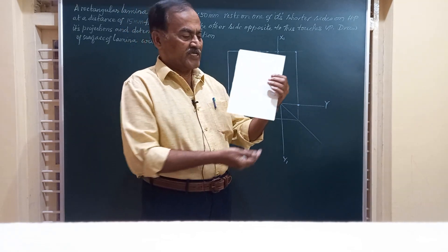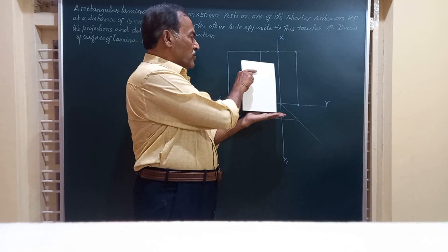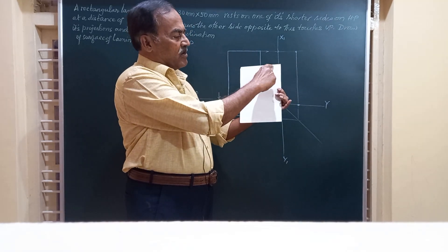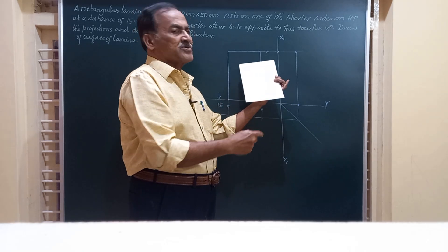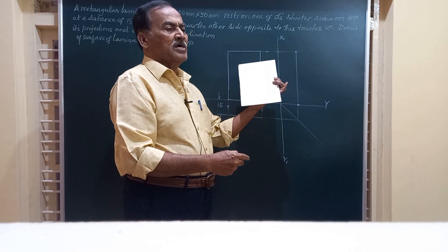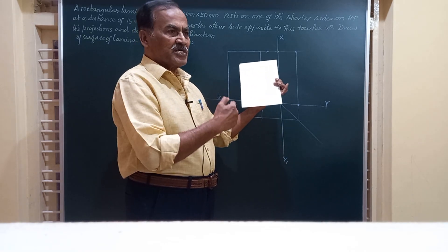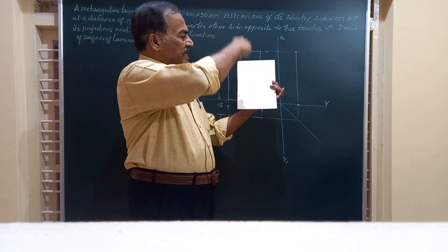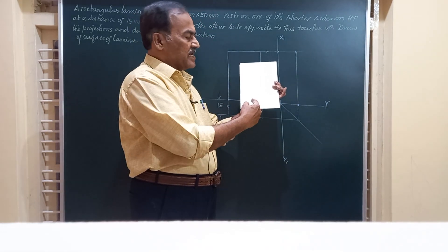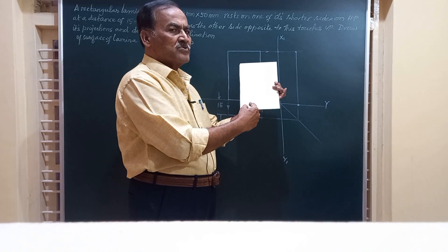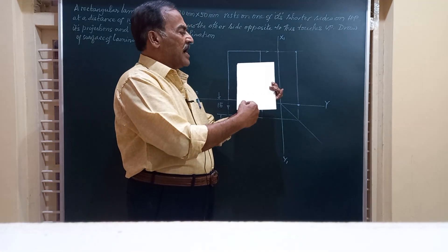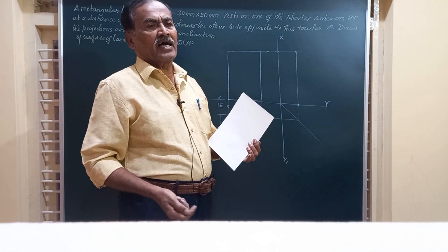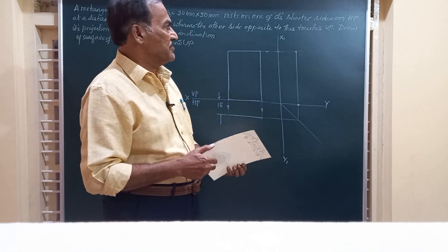The lamina is touching HP by one of its shorter edges, whereas the other opposite shorter edge will be touching VP. You are required to draw the projections — you will get a rectangle in the top view, a rectangle in the front view of reduced size, and in the end view you will obtain a line as the left or right-hand view.